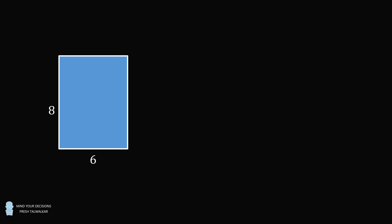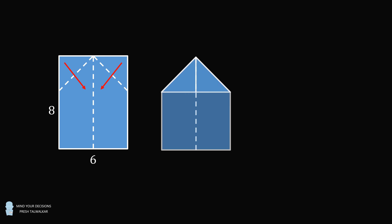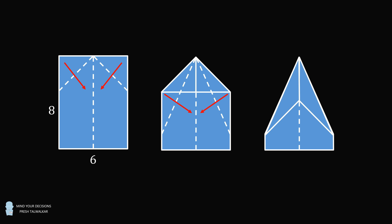Problem 3. Start with a piece of paper with dimensions of 8 and 6. Fold the paper in the center, and then create two folds like this. Fold the left side of the paper so that the corner goes to the middle of the paper, and fold the right side of the paper so the upper right corner goes to the middle. You'll end up with the following folded piece of paper. Now, make two more folds so that each new corner ends up going to the middle. You end up with this paper airplane type shape. What is the area of this shape? This problem comes from an Iranian mathematical Olympiad.